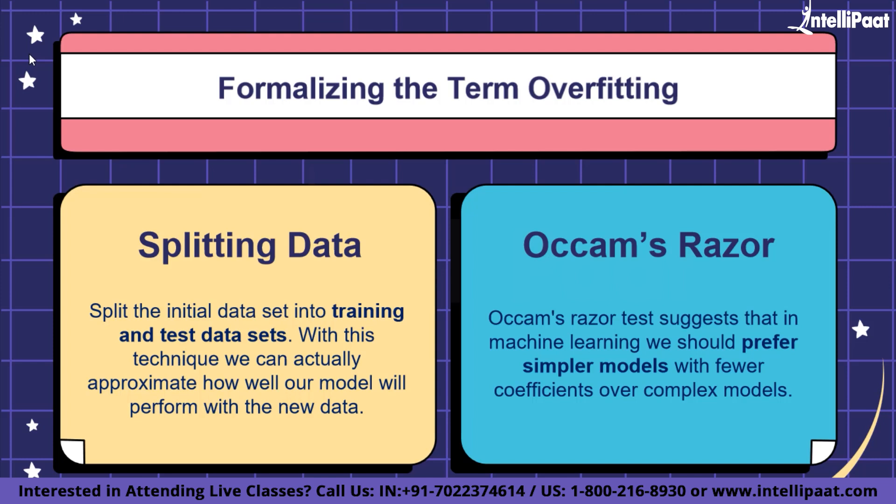Another way to detect overfitting is to start with a simplistic model that serves as a benchmark. With this approach, if you try more complex algorithms you'll understand if the additional complexity is even worthwhile. This approach is commonly referred to as Occam's Razor, which suggests that in machine learning we should prefer simpler models with fewer coefficients over complex models. The razor is a heuristic suggesting more complex hypotheses make more assumptions, making them too narrow and not generalizing well.